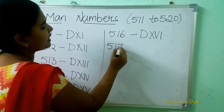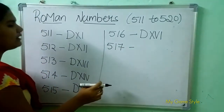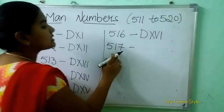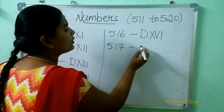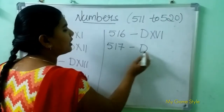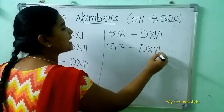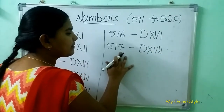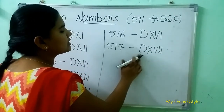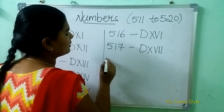517 means 517. So how to write here? D is 500. XVII is 17. So this means 517.